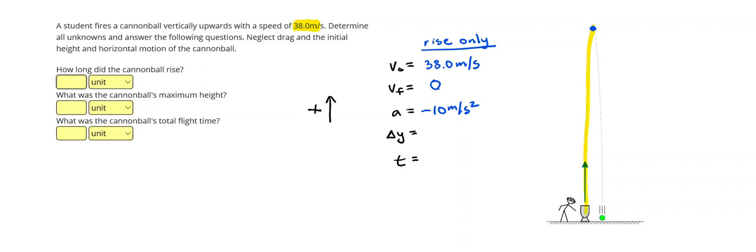So I'm going to start by getting the time. So the time is going to be, I can find that by doing the final velocity minus the initial velocity divided by the acceleration. Since the final velocity is zero, it just becomes negative 38 divided by negative 10, or 3.8 seconds. That's our first answer. The cannonball rose for 3.8 seconds.